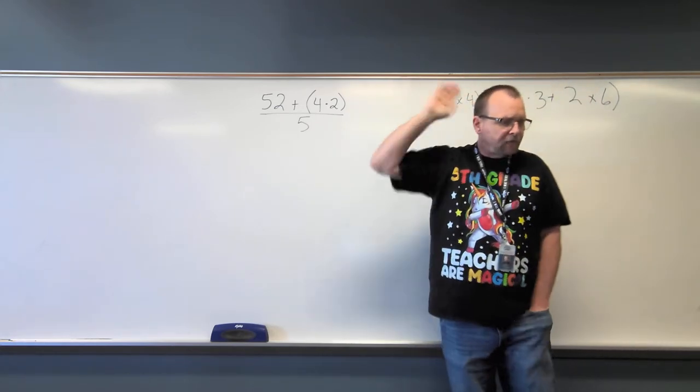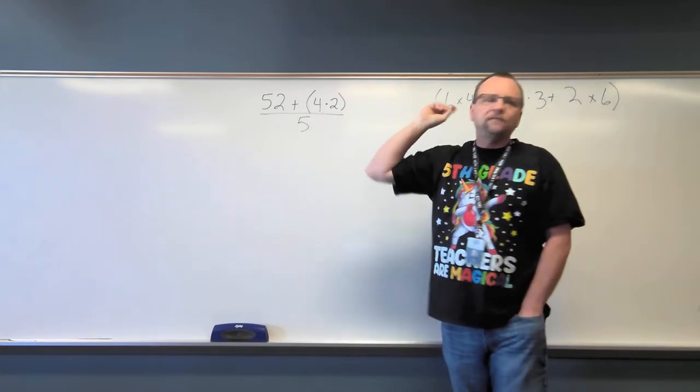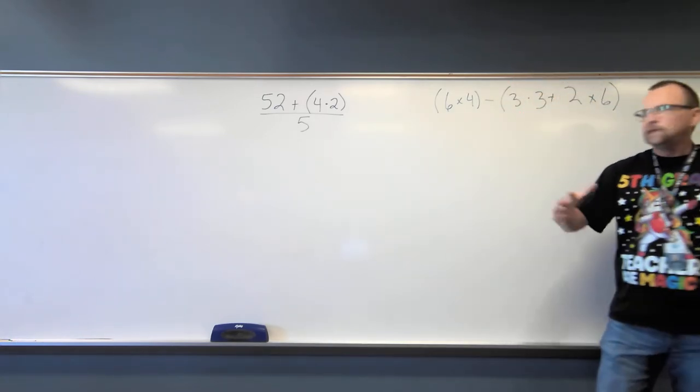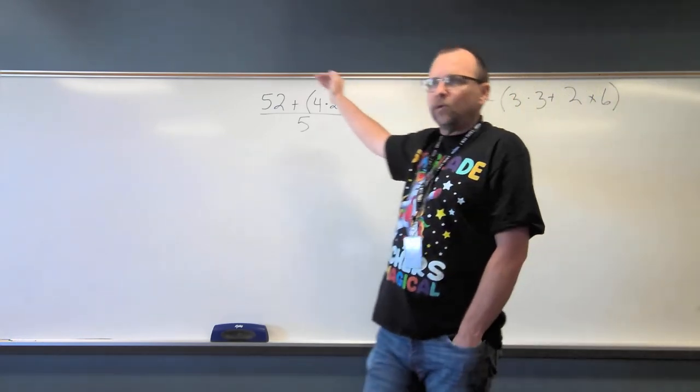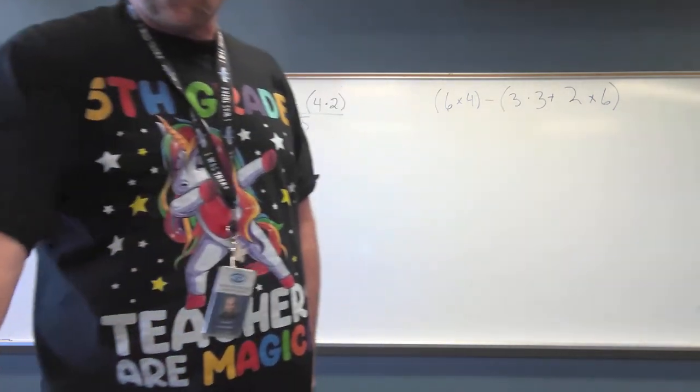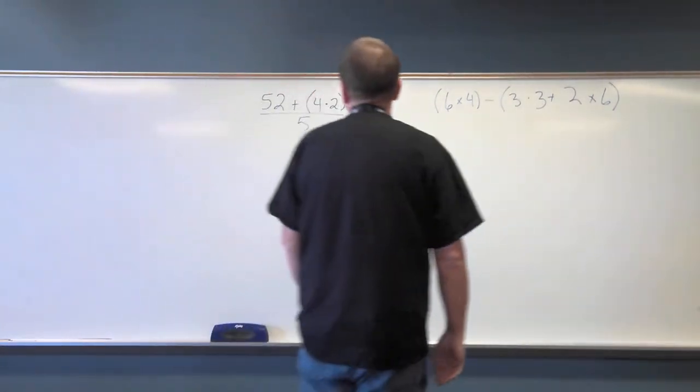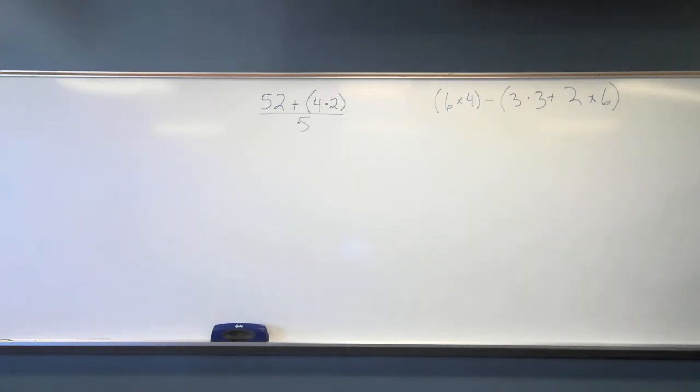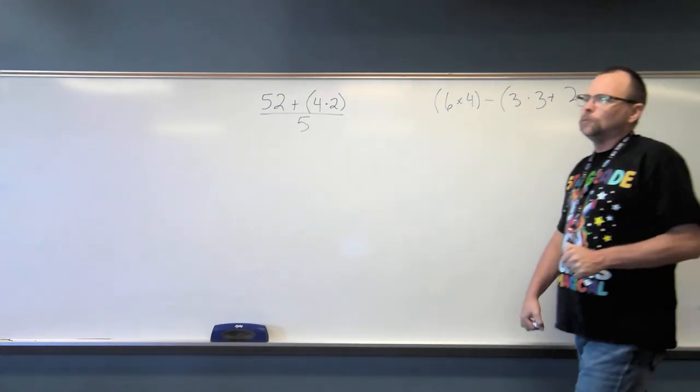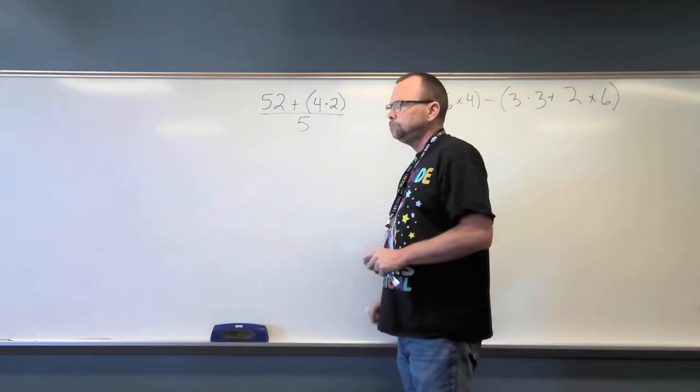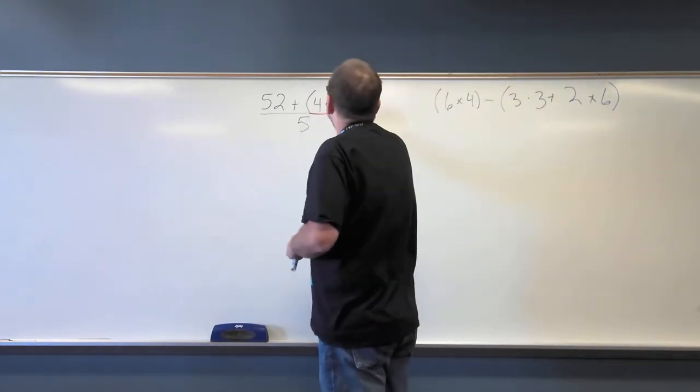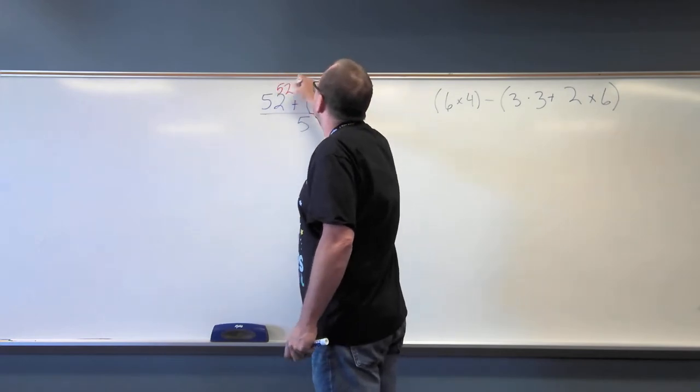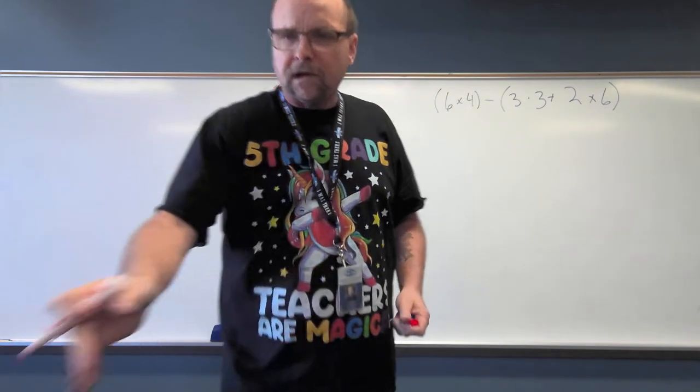Remember, we have said a fraction problem is a division problem. That is all it is. Now we can't divide until we get the top part finished, our numerator as it's known in the business. So Matt, what part do I start with on my numerator? Good, and what is four times two, Matt? Eight. So now I have 52 plus eight divided by five.